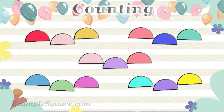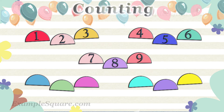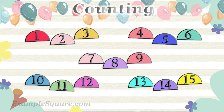How many semicircle shapes are there? 1, 2, 3, 4, 5, 6, 7, 8, 9, 10, 11, 12, 13, 14, 15. There are 15 semicircle shapes.